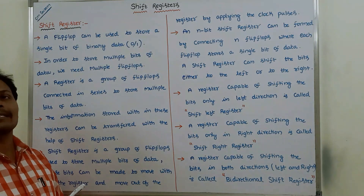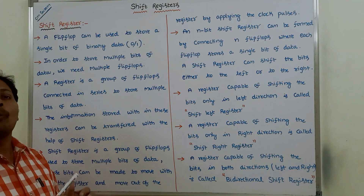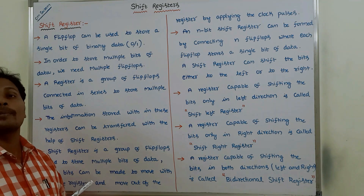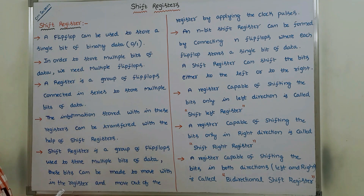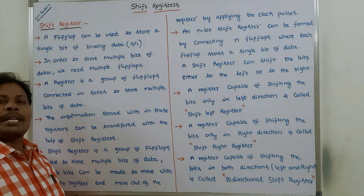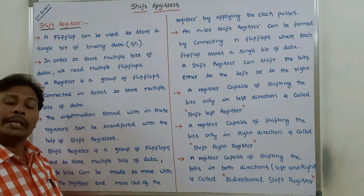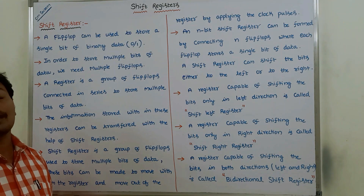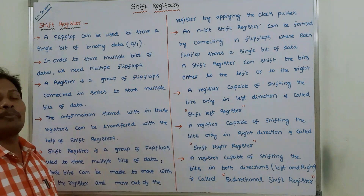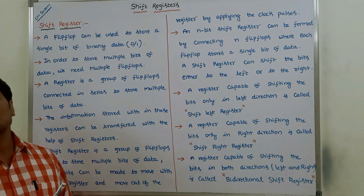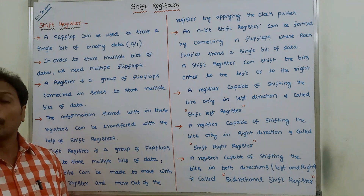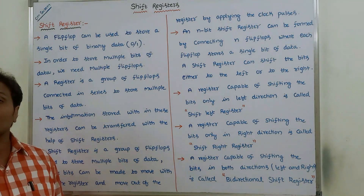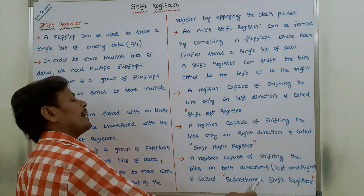Those n number of flip-flops are connected in series, so it can be called as an n-bit shift register. Whatever data is stored can be moved either in left or right direction with clock pulses. A register capable of shifting data only in left direction is called a shift-left register. A register capable of shifting bits only in right direction is called a shift-right register.